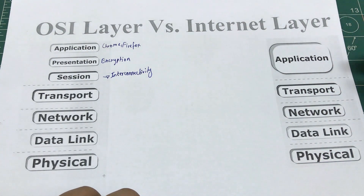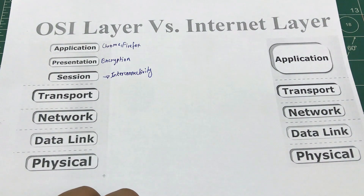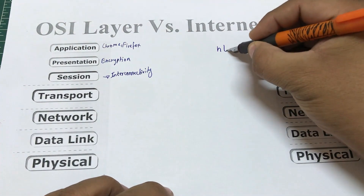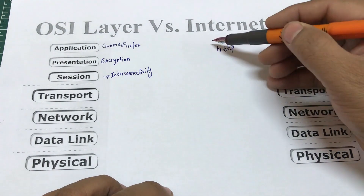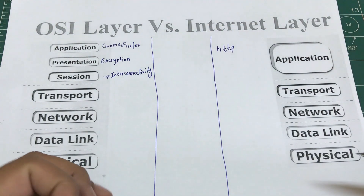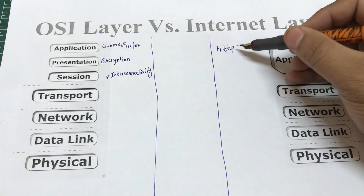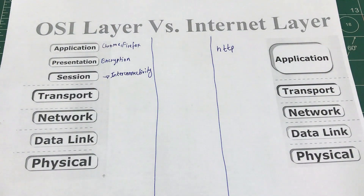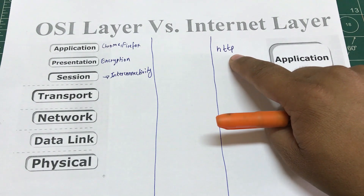One of the application layer services we use when we open our browser is HTTP. Every time you start browsing the internet, you use HTTP. For example, when you type www.youtube.com, you are using HTTP services.